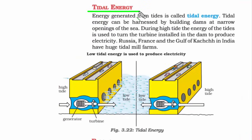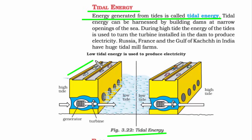Energy generated from tides is called tidal energy. You build a dam — vehicles travel on top and the tides make water flow through small holes beneath, turning turbines inside to produce electricity. In hydro energy we stored water and made it fall from a height; in tidal energy we are not storing water — we stop it with a dam and allow it to flow through a channel. This is an important difference to remember.